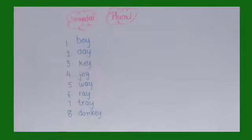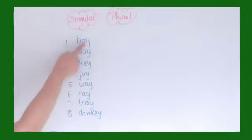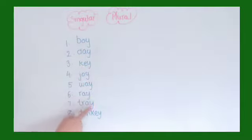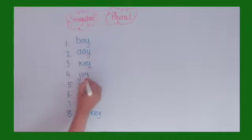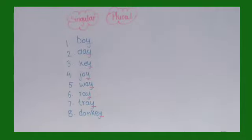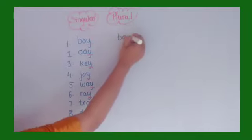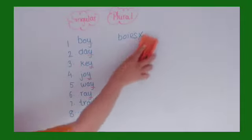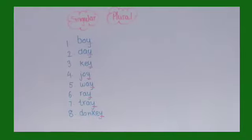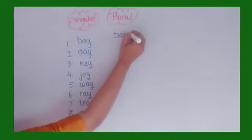Now children, look here — singular and plural. You see the words are ending with the letter Y. So you might think we will remove Y and add IES. For example, would the plural of 'boy' be B-O-I-E-S? No, this is wrong. The plural for 'boy' is not B-O-I-E-S; we simply add S to make 'boys'.